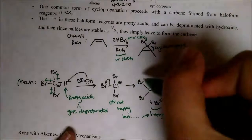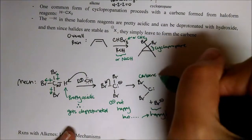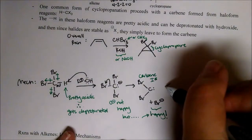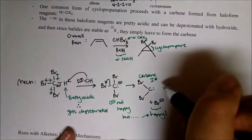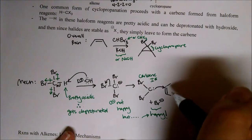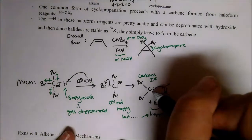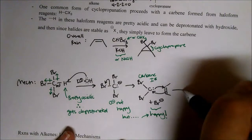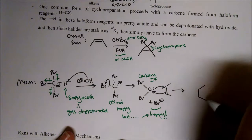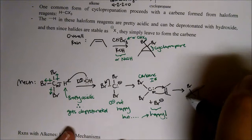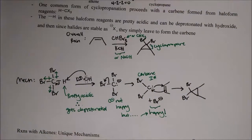Now here's our carbene — we've formed our awesome carbene. We then bring in our alkene. The carbene has electrons and can be a nucleophile, but it's also an electrophile because it's only got six electrons and has an empty P orbital, so it gets attacked as well. Simultaneously, all in one step, we form our cyclopropane. We'll pick up here on Monday.